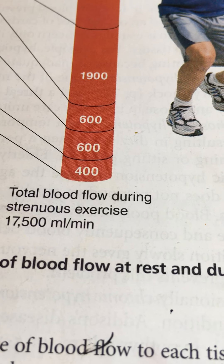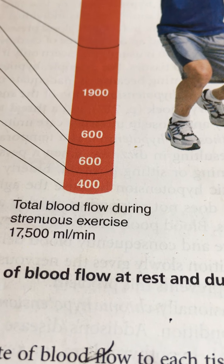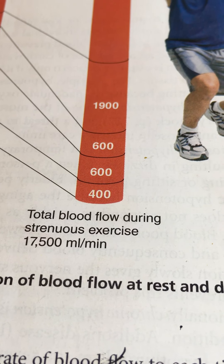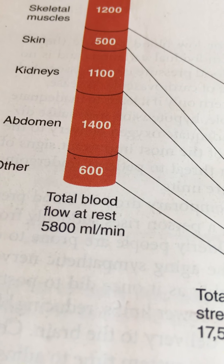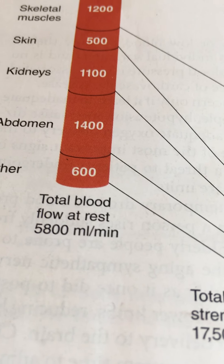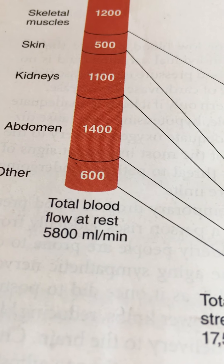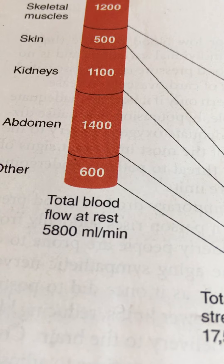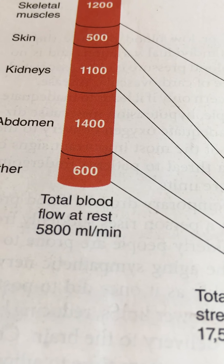Bear in mind, if this is the average gentleman, then we're looking at probably around six or seven pints of blood. So when we're looking here at milliliters, that would be around 5,000 as the total. At rest, the amount of blood flowing per minute through the entire system is 5,800 milliliters — 5.8 liters.